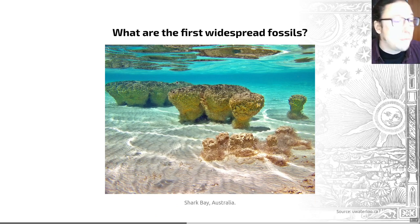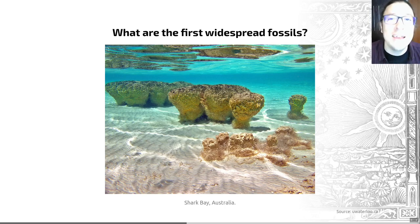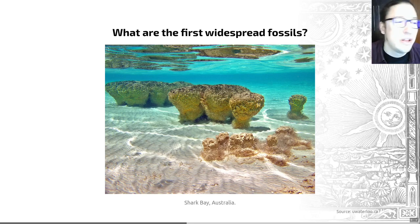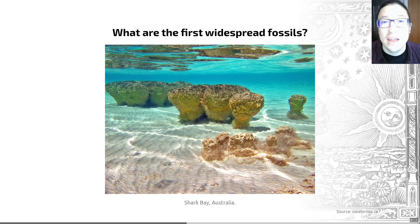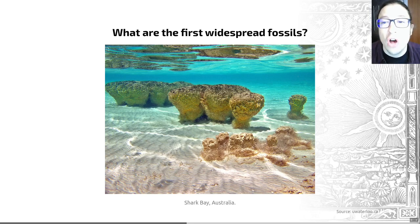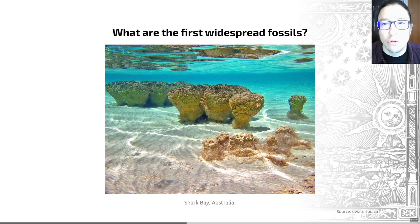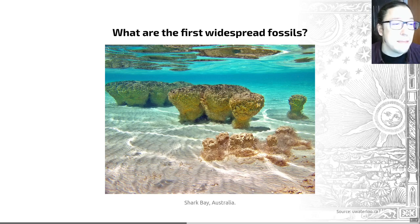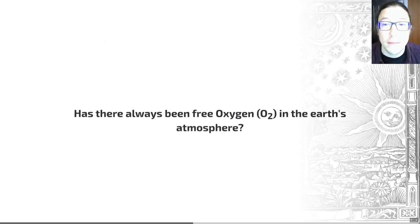Stromatolites are relatively rare today. They're found in a place in Australia called Shark Bay, and that's where this photo comes from — these are some modern stromatolites. Today, these structures only develop in environments that nothing else can survive, such as high salinity bays or lagoons. That's because today, things love to eat the kind of bacteria that could create a stromatolite, whereas on early Earth there weren't other organisms such as invertebrates grazing early prokaryotes, thus preventing stromatolite growth.